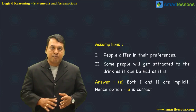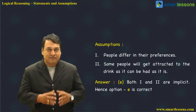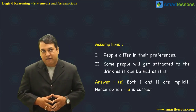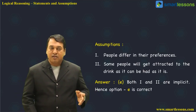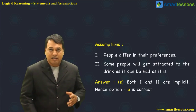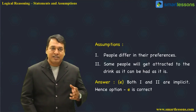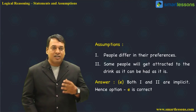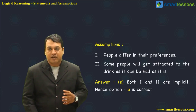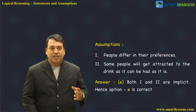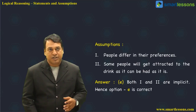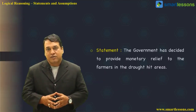People definitely differ in their preferences — some people would like to have the drink as it is, and some would like to add ice and make it cooler. So assumption one is logically reasonable. Assumption two — some people will get attracted to the drink as it can be had as it is, since they can open the lid and have it instantly. Both options look reasonable, so the correct answer is option E — both one and two are implicit.